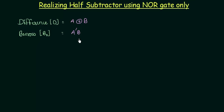Now I'm going to use the concept from the universal gate lecture on how to realize the XOR gate using NOR gates. We'll use 5 NOR gates to realize the A XOR B operation.